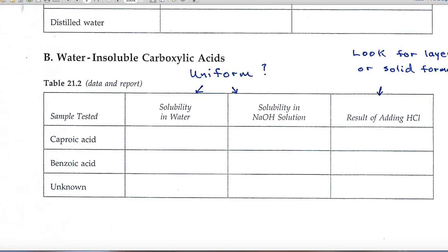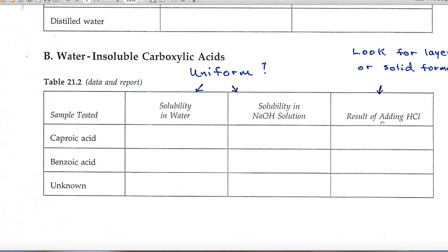In Part B, we look at water-insoluble carboxylic acids. You're testing three things, two standards, and then your unknown. And you'll be looking for solubility in water. If something is soluble, that means it forms a solution, and a solution by definition is uniform. So you won't see two layers or two different regions. You'll be looking for uniformity. In the last part of this, Part B, the result of adding hydrochloric acid, you will look for layering and solid formation. So your comments will use those terms.